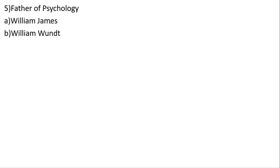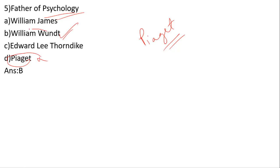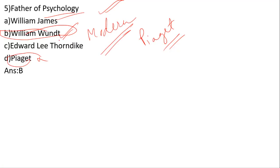Who is called the father of psychology? Options: William James, William Wundt, Edward Lee Thorndike, Piaget. The correct answer is option B — William Wundt is the father of psychology, and also the father of modern psychology.